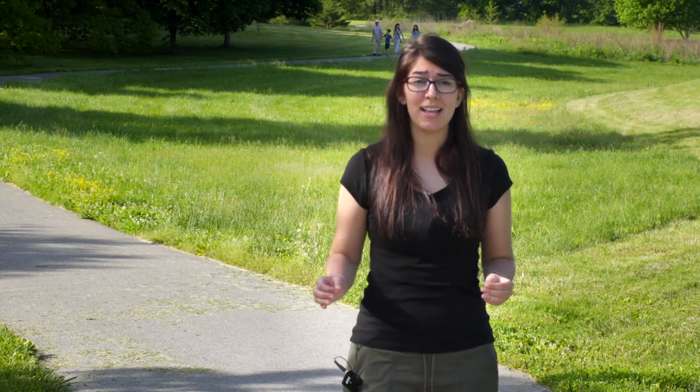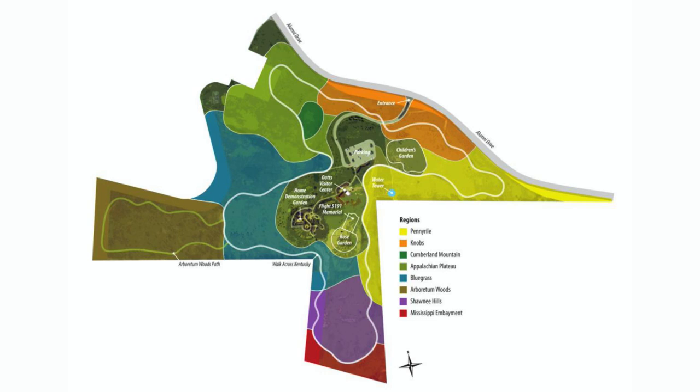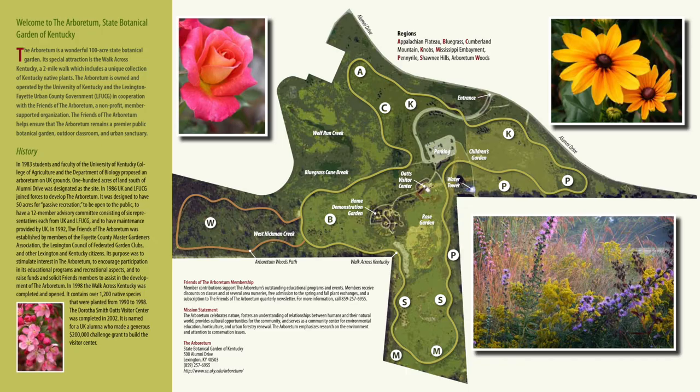This is an online database that you can use to explore our plants and learn more about the arboretum. Our two-mile path traverses through the Walk Across Kentucky native plant collection, and every tree and shrub has been wild collected from one of the seven physiographic regions of Kentucky. This is to help us conserve the botanical and genetic diversity of the plants here in Kentucky.